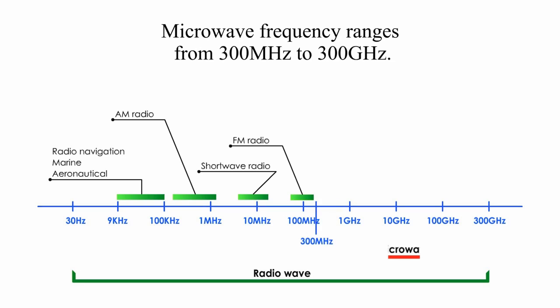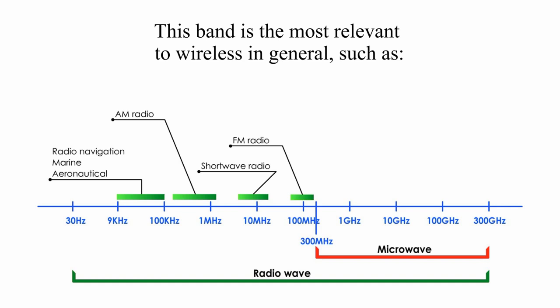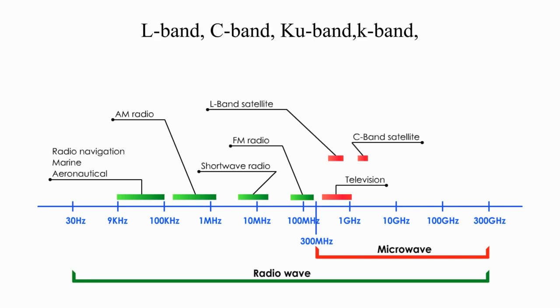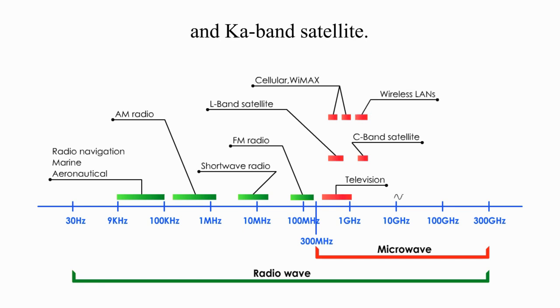Microwave frequencies range from 300 MHz to 300 GHz. This band is the most relevant to wireless in general, such as Wi-Fi, cell phone, WiMAX, GPS, L-band, C-band, Q-band, K-band, and K-band satellite.